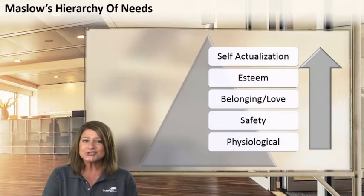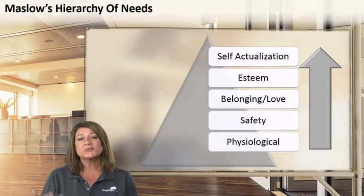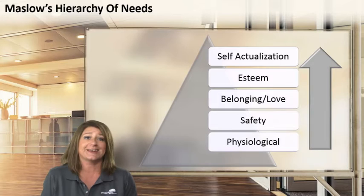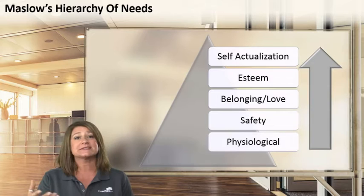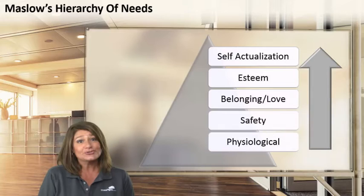Maslow's hierarchy of needs starts at the bottom with physiological needs — all humans needing air, food, and water. Once we get that, we move up to the safety rung, which is freedom from harm and, in this day and age, job security. Once we have those things, we can focus on esteem, belonging, love, and all of those things that make us human. Once we reach the pinnacle of self-actualization, we're no longer driven by needs — we're driving our own train in the direction we want it to go.